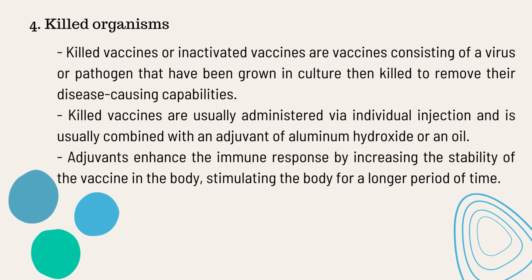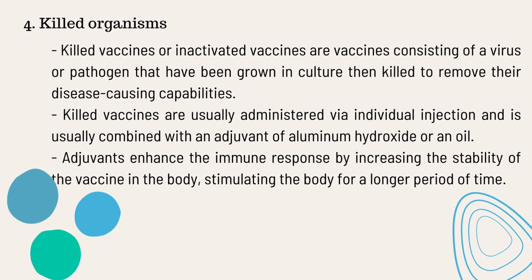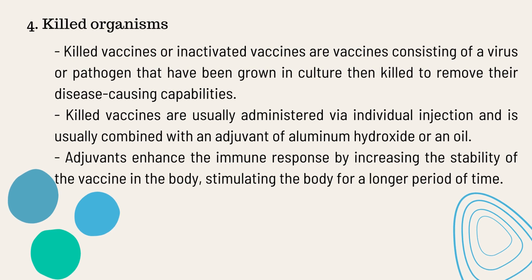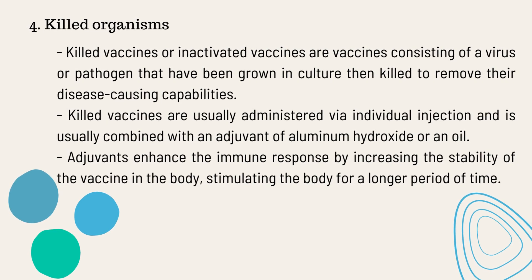The next type of vaccine is the killed organisms vaccine, or inactivated vaccines. It consists of a virus or pathogen that has been grown in culture but killed to remove their disease-causing capabilities. Killed vaccines are administered by individual injection and are accompanied by an adjuvant of aluminum hydroxide or an oil. An adjuvant is a substance that enhances the immune response by increasing the stability of the vaccine in the body, stimulating the body for a longer period of time.